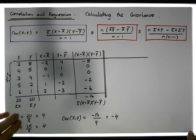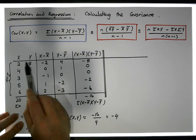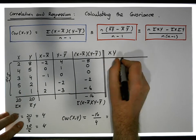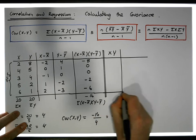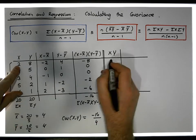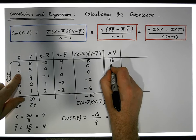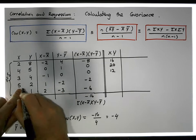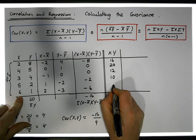With this particular formula, the only thing we require that we haven't got already is our x*y values — that's the only thing that's missing. So we calculate x times y: 2 times 8 gives us 16, 4 times 5 gives us 20, 3 times 4 gives us 12, 5 times 2 gives us 10, and 6 times 1 gives us 6.